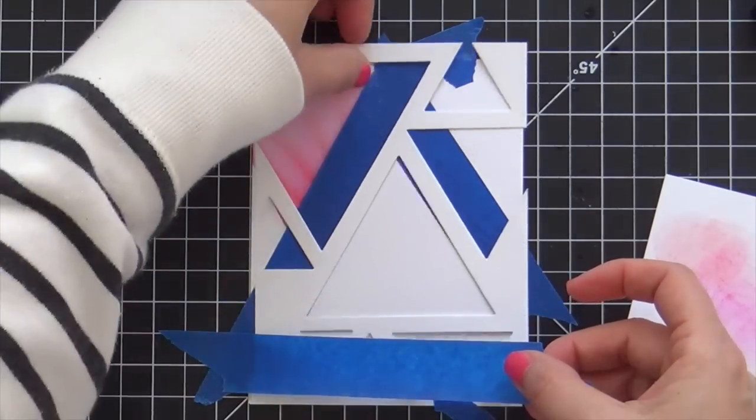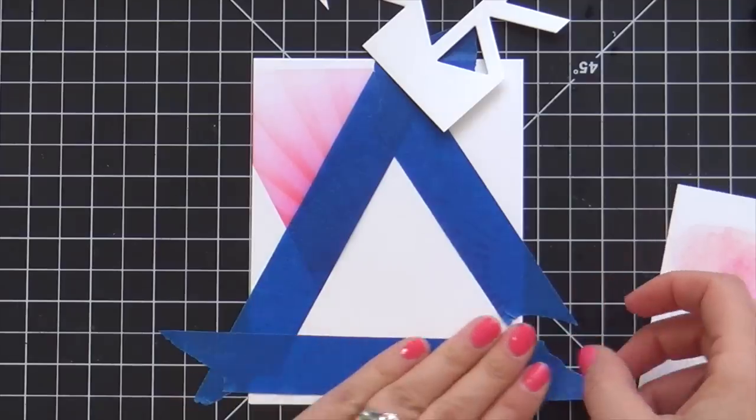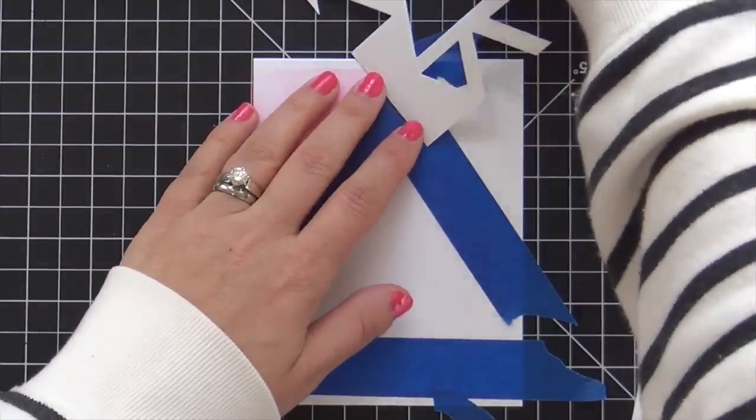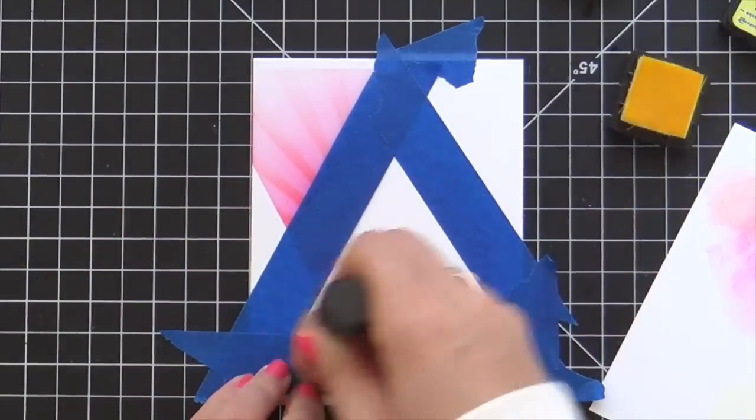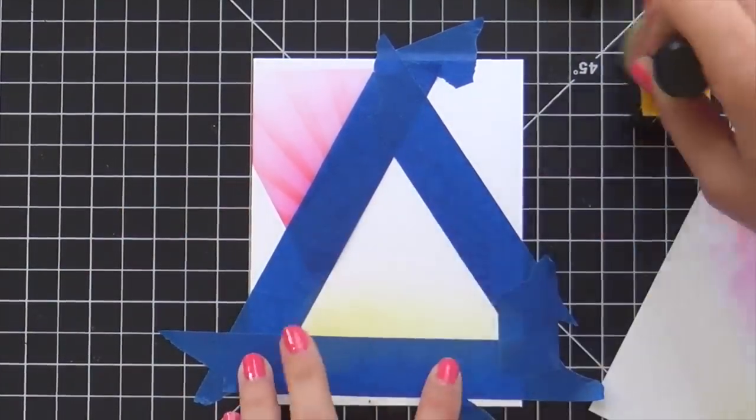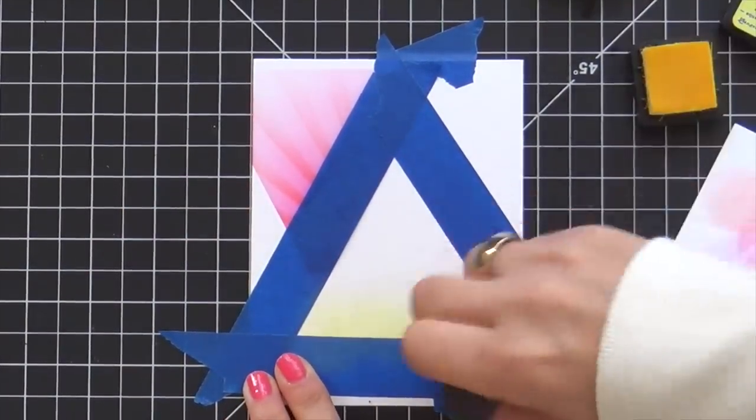This time I'm going to ink blend with Squeezed Lemonade. One thing you got to be aware of when you're doing all this masking and ink blending with various colors is to make sure that your surfaces are clean.